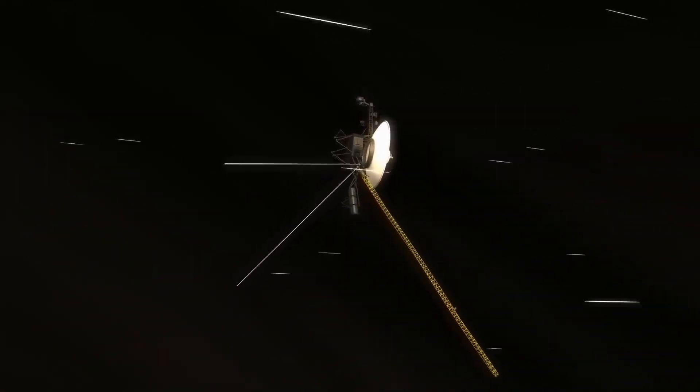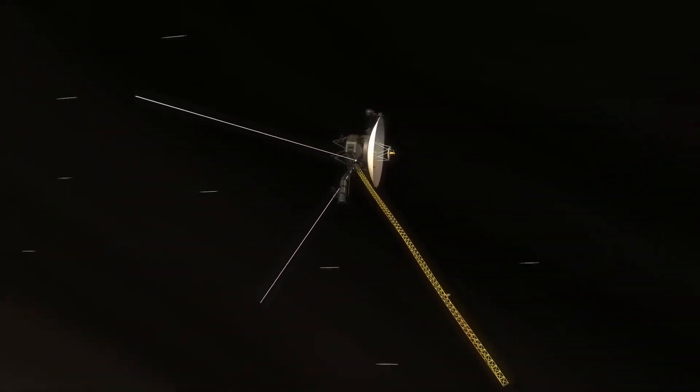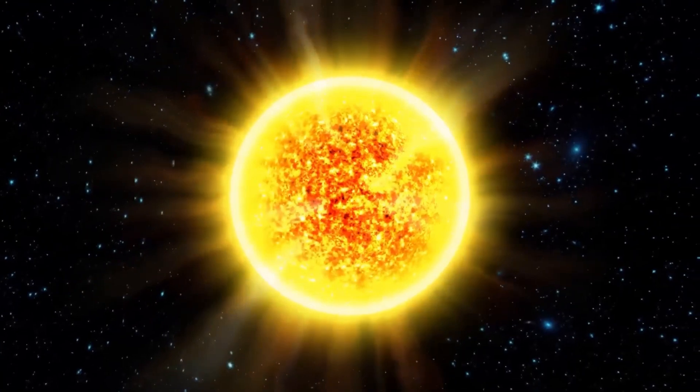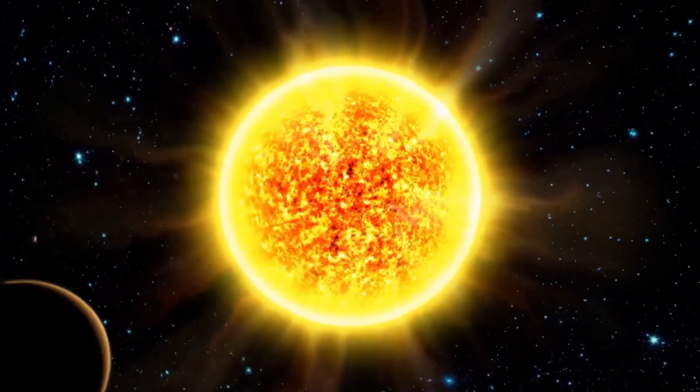Scientists had initially estimated that the Heliopause lay about 50 astronomical units from Earth, and so NASA decided to continue funding the Voyager mission as the probes approached this landmark.